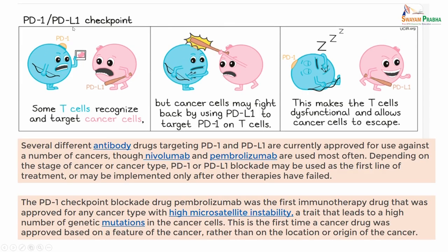Next, after the CTLA4, one needs to understand the PD-1 and the PD-L1 checkpoint. The T cells have the PD-1 and the tumor cells have the PD-L1. Some of the T cells are able to recognize the cancer cells, but the cancer cells are able to fight back by using PD-L1 to target PD-1 on the T cells. When PD-L1 and PD-1 bind, the immune reaction fails. This makes the T cells dysfunctional and therefore the cancer cells have escaped.